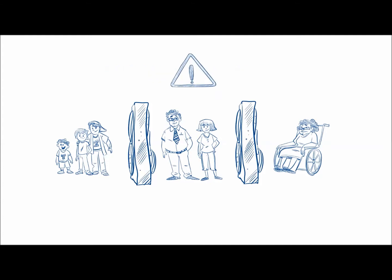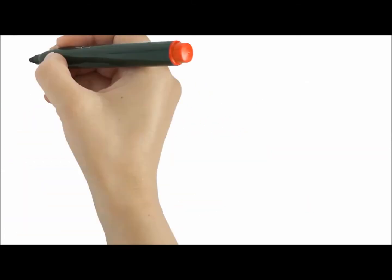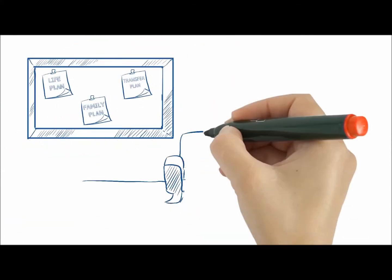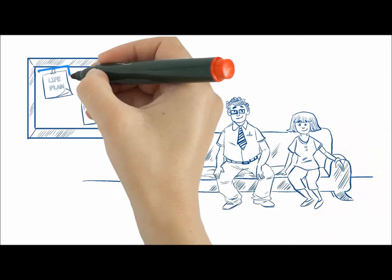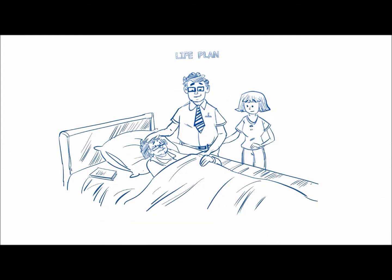If an emergency took place without proper planning, where would the children end up and what would happen to grandma? A proper estate plan can help Bob and Laura address incapacity by leaving a life plan to allow someone to take care of things in their absence.